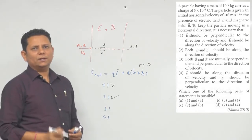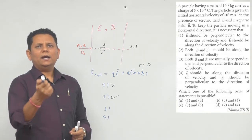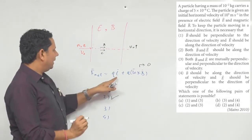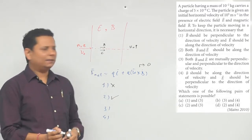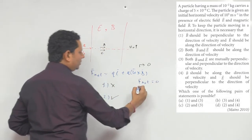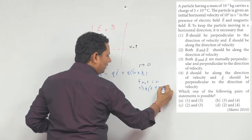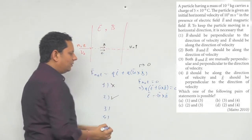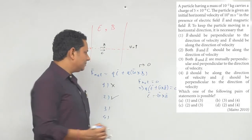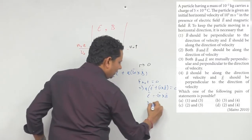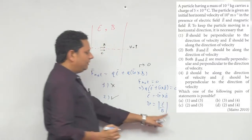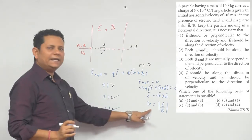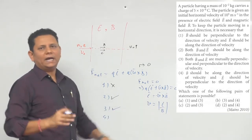तीसरा case कहता है: both E and B are mutually perpendicular and perpendicular to the direction of velocity। यह बहुत special case है जिसे हम 'velocity selector' के नाम से पढ़ते हैं। अगर F_net = 0, तो q(E + v × B) = 0, जिसका मतलब E = −(v × B)। इसमें E, v और B दोनों के perpendicular है। Special velocity value आती है: v = E/B। अगर यह velocity हो तो particle सीधा चलता है — Option 3 possible है।